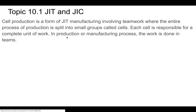In just-in-time manufacturing, you work in something called a cell. A cell is when you split up the entire production process into small groups. For example, a car manufacturer might have one cell working on engines, one on interiors, one on dashboards, one on the drivetrain, one on the chassis, and so on. Teams of workers in cells handle those particular parts of the manufacturing process.